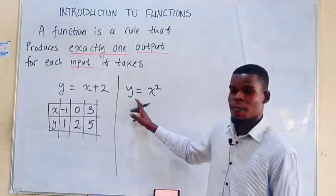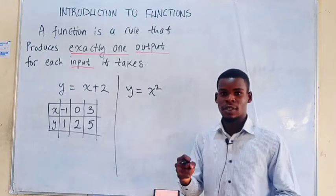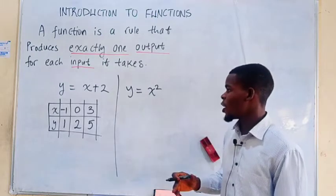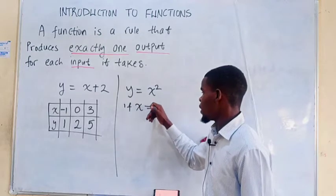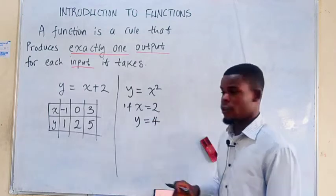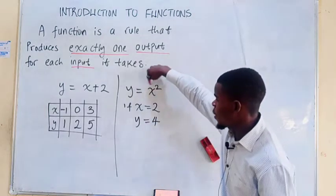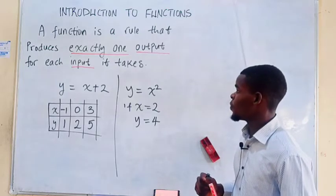So this tells us that for any input x, the value of y will be the square of that. When you plug in something, you square that, and that will be your output. So if x is 2, if you say let x be 2, then that tells us that y will be just 4, given that this is the function defined to be the square of any input.